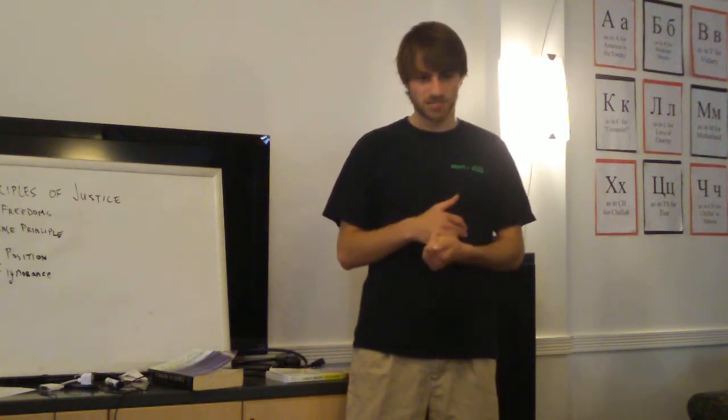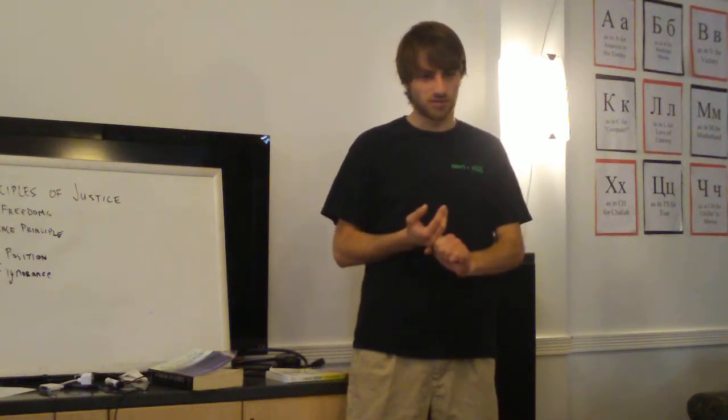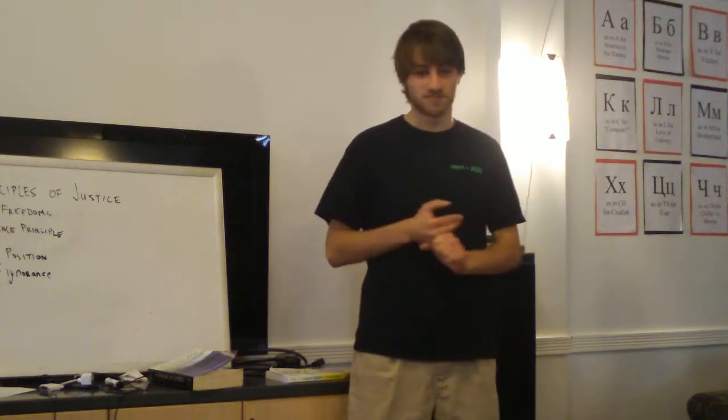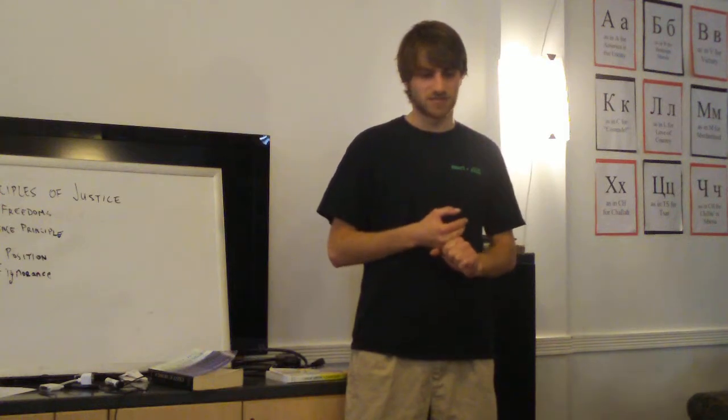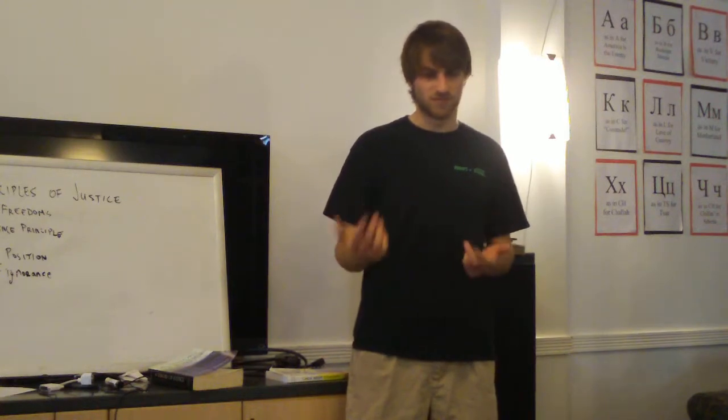So he believes we should create institutions that abide by the two principles of justice. So a government that would guarantee basic freedoms and a distribution of wealth that meets the difference principle. That's what he would say is just in society. And anything that doesn't meet that would therefore be some level of injustice.